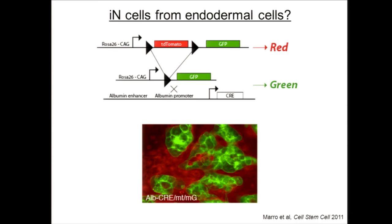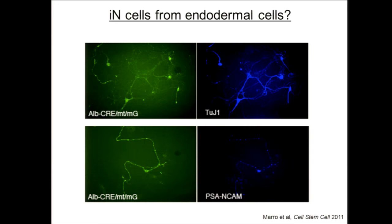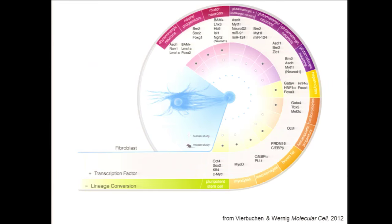Samuele, the postdoc in the lab who did these experiments, delivered the three reprogramming factors that had worked so well for fibroblasts, and could clearly demonstrate both red and green iN cells in immunostainings — showing that these cells express neural markers and are also functional. This was really important data to solidly conclude that it is actually possible to go directly from one germ layer compartment into another without going through the iPS cell stage.